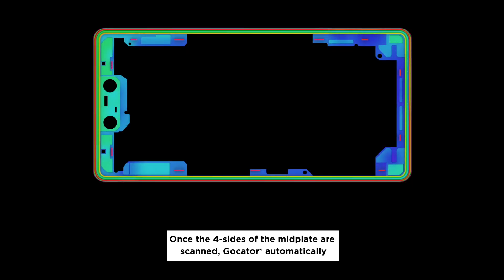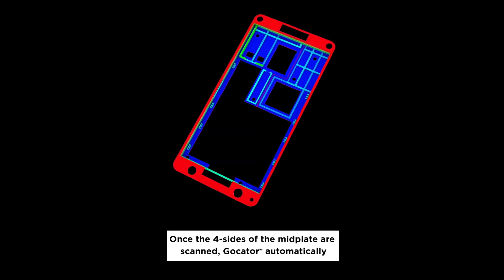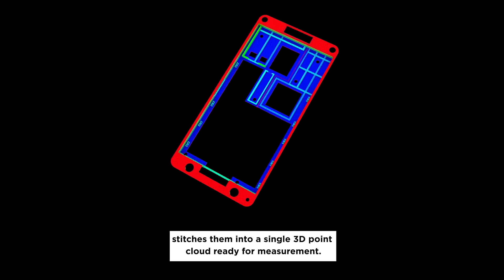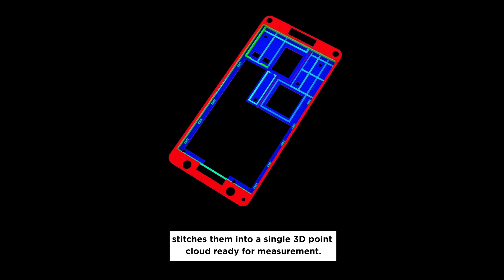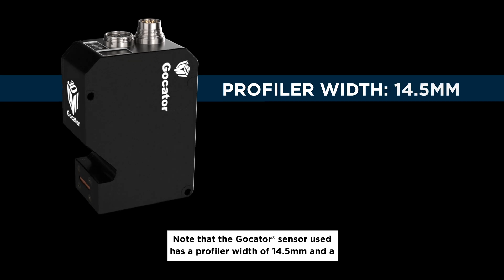Once the four sides of the midplate are scanned, Gocator automatically stitches them into a single 3D point cloud ready for measurement.